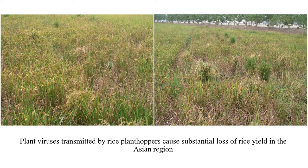One of the challenges in growing rice is that you can get plant viruses that can damage your crop substantially. In these pictures we can see some of the damage caused by viruses. These viruses are generally spread by plant hoppers and they are particularly damaging around the Asian region, where they are responsible for substantial decreases in rice yield.